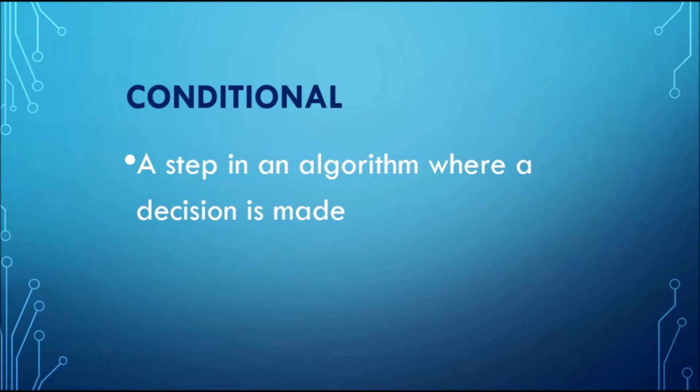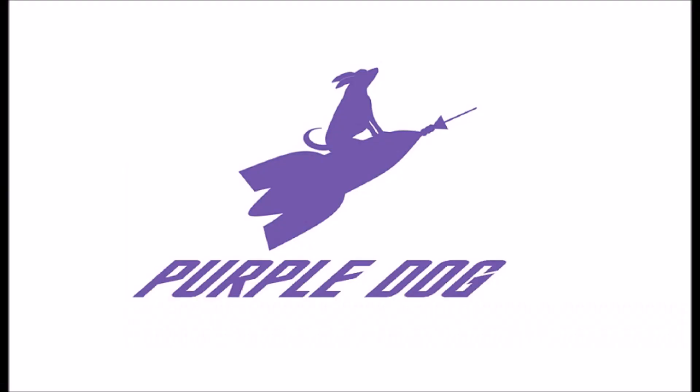These were a few types of conditionals you will see as you are programming and coding. To summarize, conditionals are steps in an algorithm where decisions are made. Just like the algorithms that contain them, conditionals range from being simple and straightforward all the way to being highly complex. In the next video, I'll be describing what loops are and why they are used.